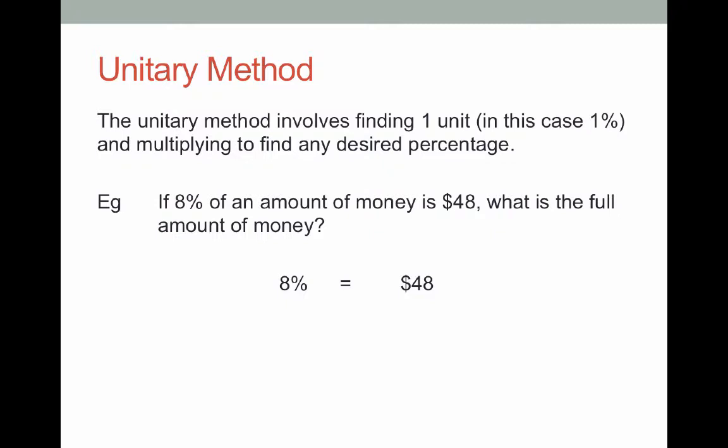What we want to do is use the unitary method, so what we're going to do is find out what 1% is. To do that we divide by 8 because 8% divided by 8 gives us 1%. Now we divide our $48 by 8 to get an equivalent equation. So in this case 1% is going to be $6.